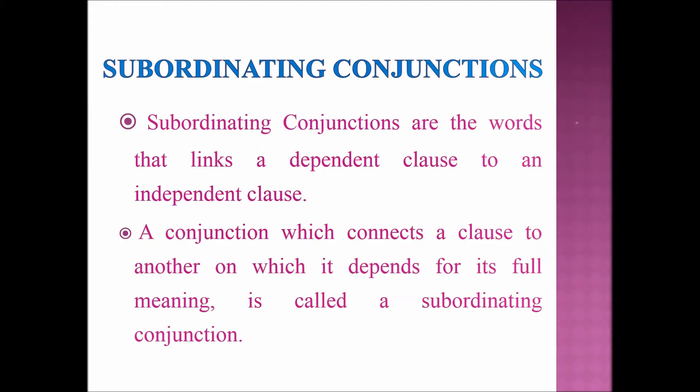Next, let's see about subordinating conjunctions. Subordinating conjunctions are words that link a dependent clause to an independent clause. In other words, a conjunction which connects a clause to another on which it depends for its full meaning is called a subordinating conjunction.